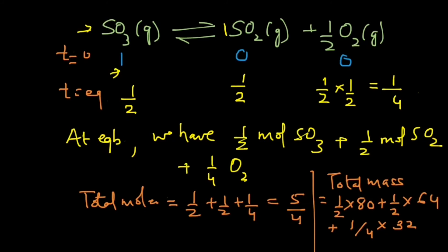And so we have the total mass equal to half into 80 gives you 40, plus half into 64 gives you 32, and one-fourth into 32 gives you 8. That means we have 80 grams.